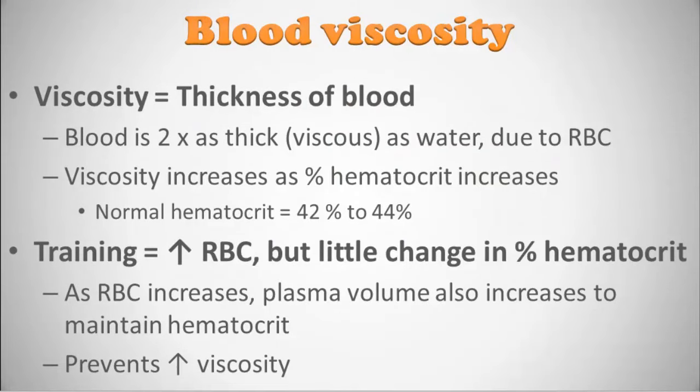Let's talk about blood viscosity — the thickness of the blood. Think of your car's engine oil: increased viscosity means increased thickness. In the human body, blood is about twice as thick or viscous as water, and this is primarily due to hematocrit. Normal hematocrit is going to be 42 to 44%, but definitely less than 50%, and it's primarily influenced by the number of red blood cells in the total blood volume.